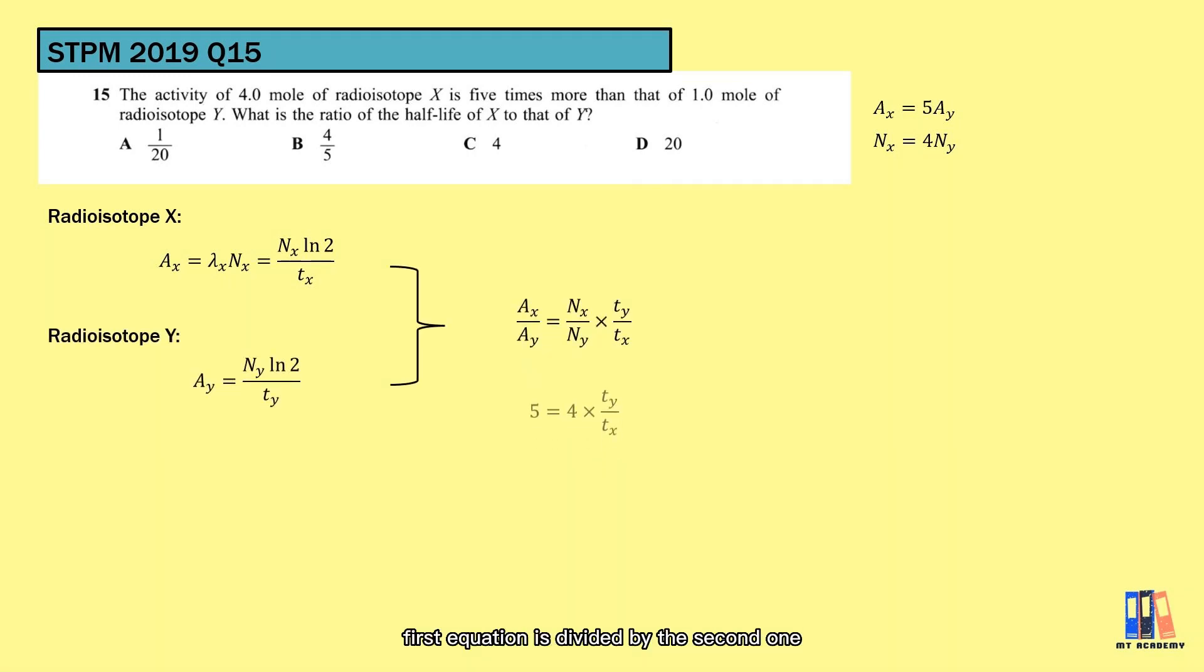Then apply simultaneous that the first equation is divided by the second one. Plugging the values, we can obtain the ratio is 4 to 5.